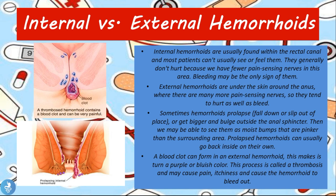Sometimes hemorrhoids prolapse, which means they fall down, slip out of place, or get bigger and bulge outside the anus sphincter. We may then be able to see them as moist bumps that are pinker than the surrounding area. Prolapsed hemorrhoids can usually go back inside on their own. A blood clot can also form in the external hemorrhoid, turning it a purple or bluish color — a process called thrombosis — which may cause pain, itchiness, and bleeding.